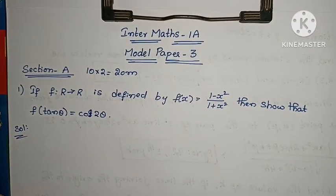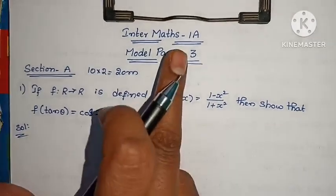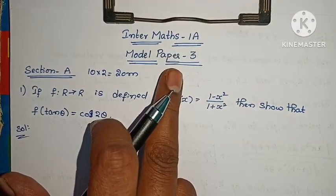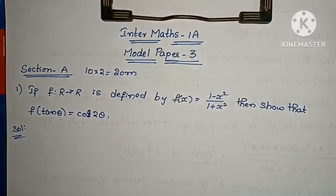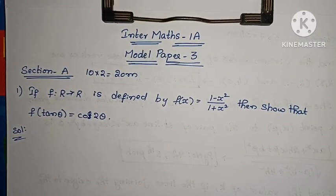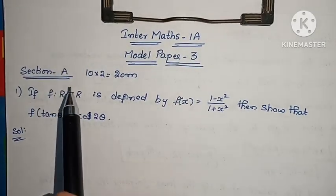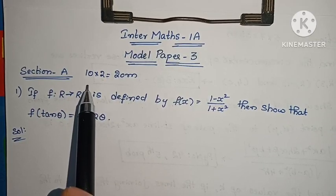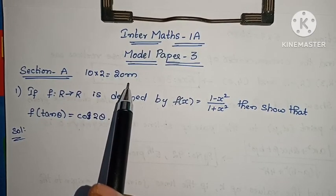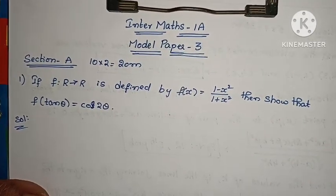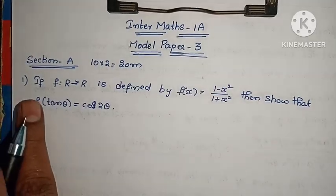Hi, welcome to Pernikka Maths. In the Maths one, Model Paper 3. Already two model papers completed; this is the third model paper. In the section, yellow two-marks problems under 10, on time. So total 20 marks. Important questions with solutions.